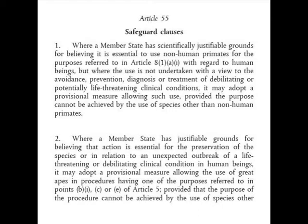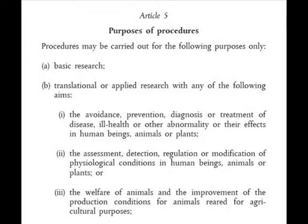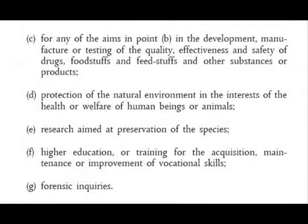This allows great apes to be experimented on for all types of reasons. Looking back at Article 5, it covers the avoidance, prevention, diagnosis and treatment of disease, ill health or other abnormality or their effects in human beings — though not animals or plants under Article 55. Also Article 5 point C is referenced for great apes — which covers the development, manufacture or testing of the quality, effectiveness and safety of drugs, foodstuffs, feedstuffs and other substances or products. You can see how wide the scope is for great apes to be used in experiments, so there is not much protection for them.